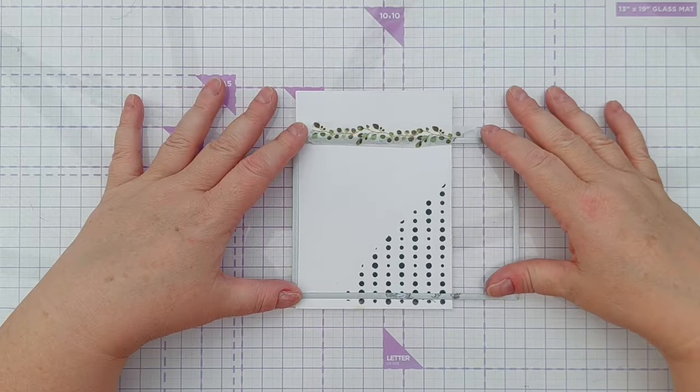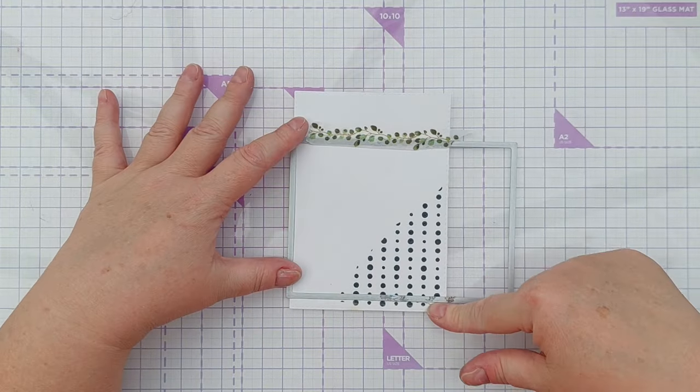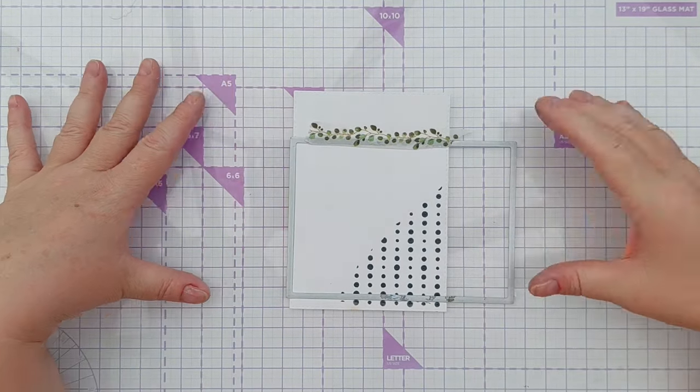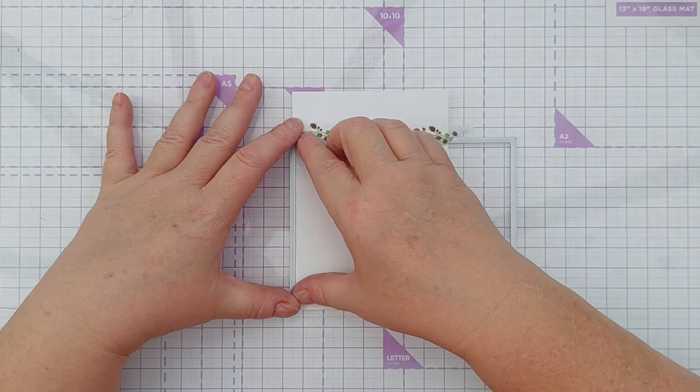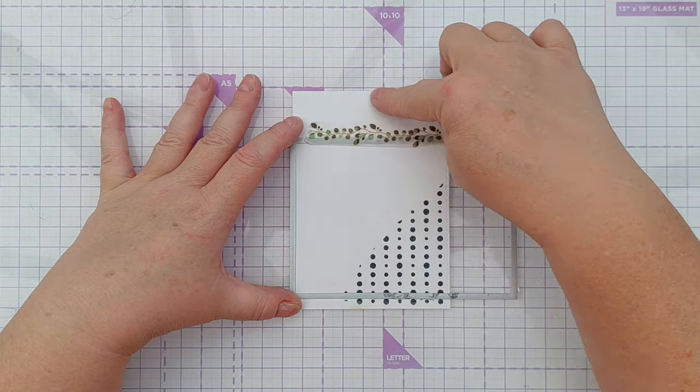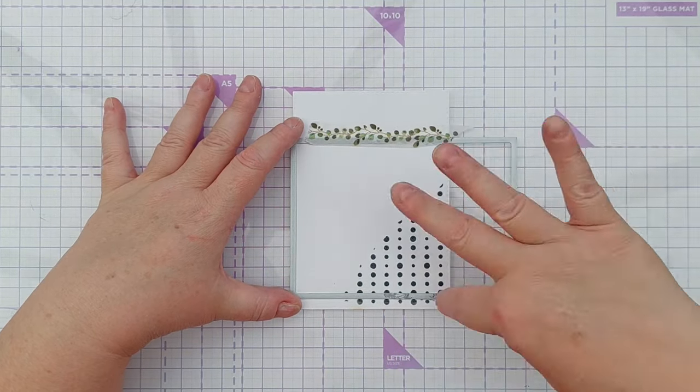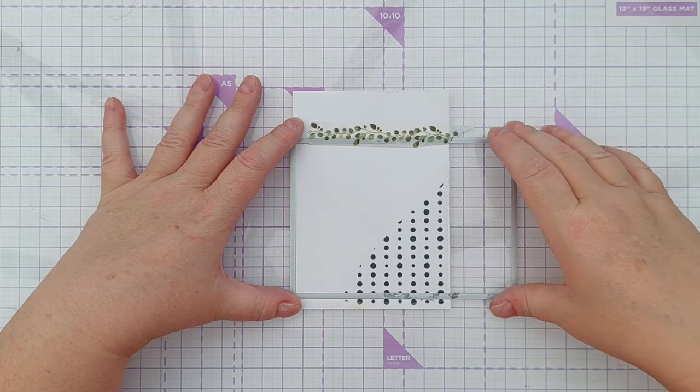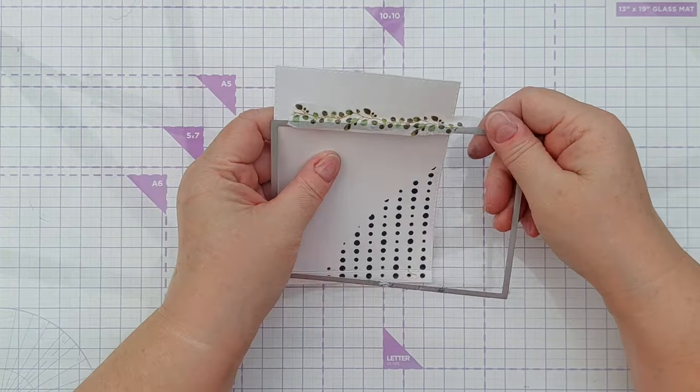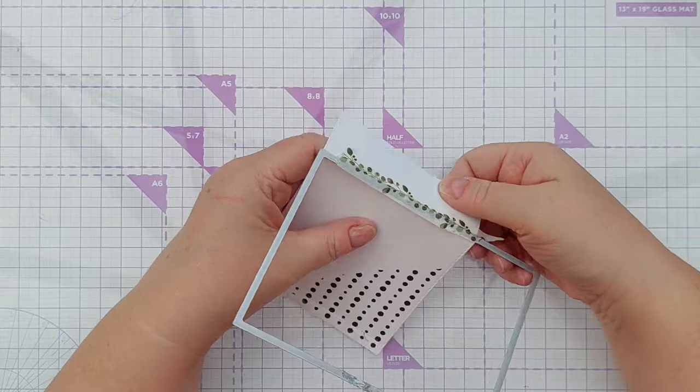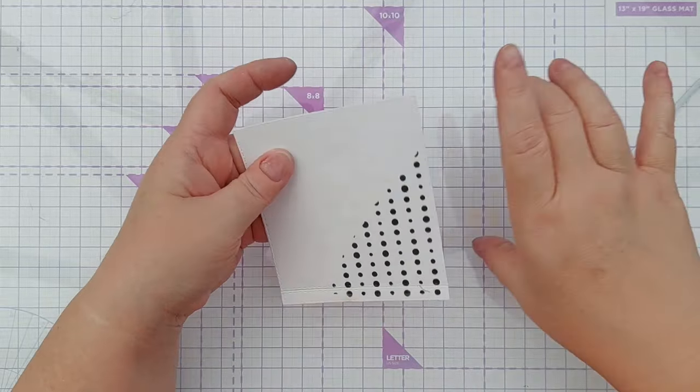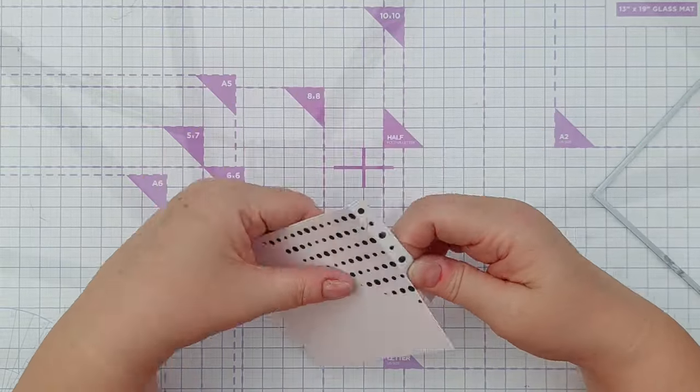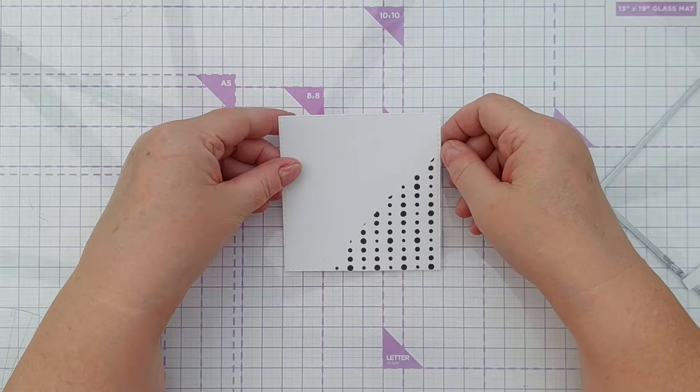So I've decided to fix this singed portion by chopping it off and all I've done is turn the rectangle die that I used to cut the original panel out through 90 degrees, stuck it on so that it's square and then I've run that through my cuttlebug and that's now given me a nice square piece.